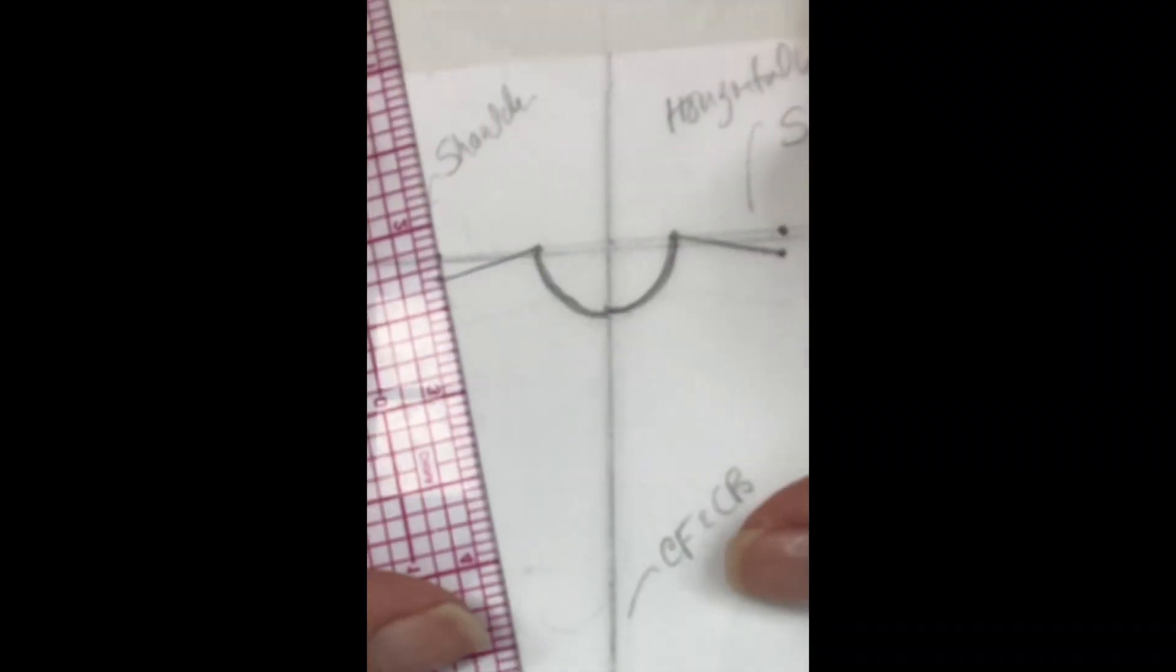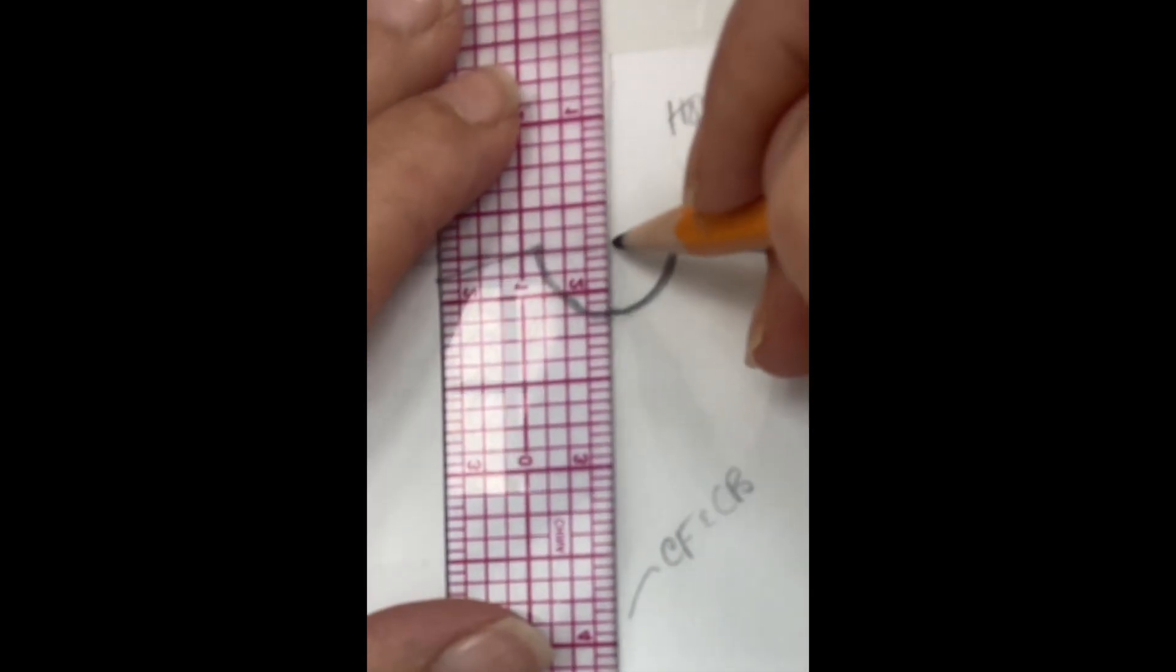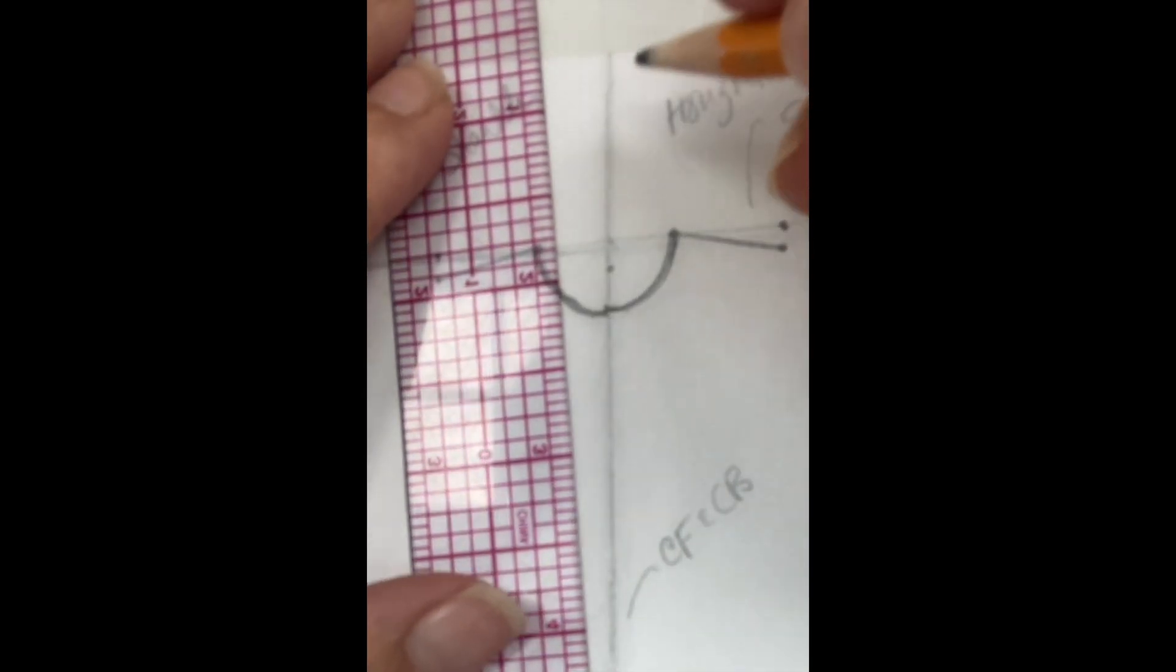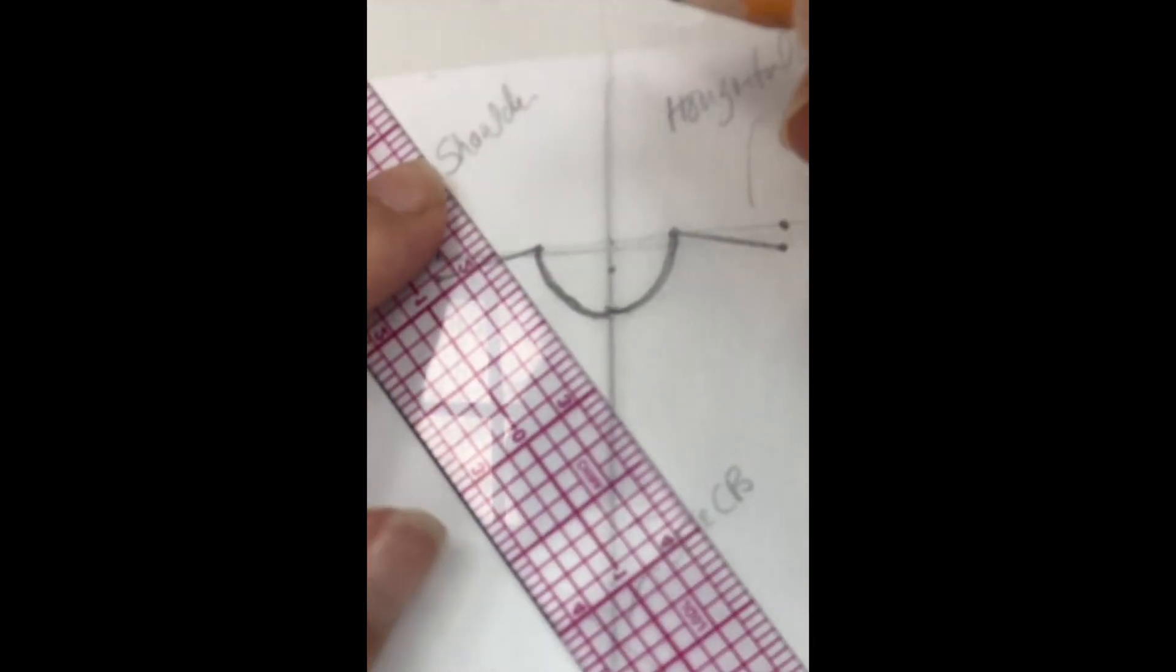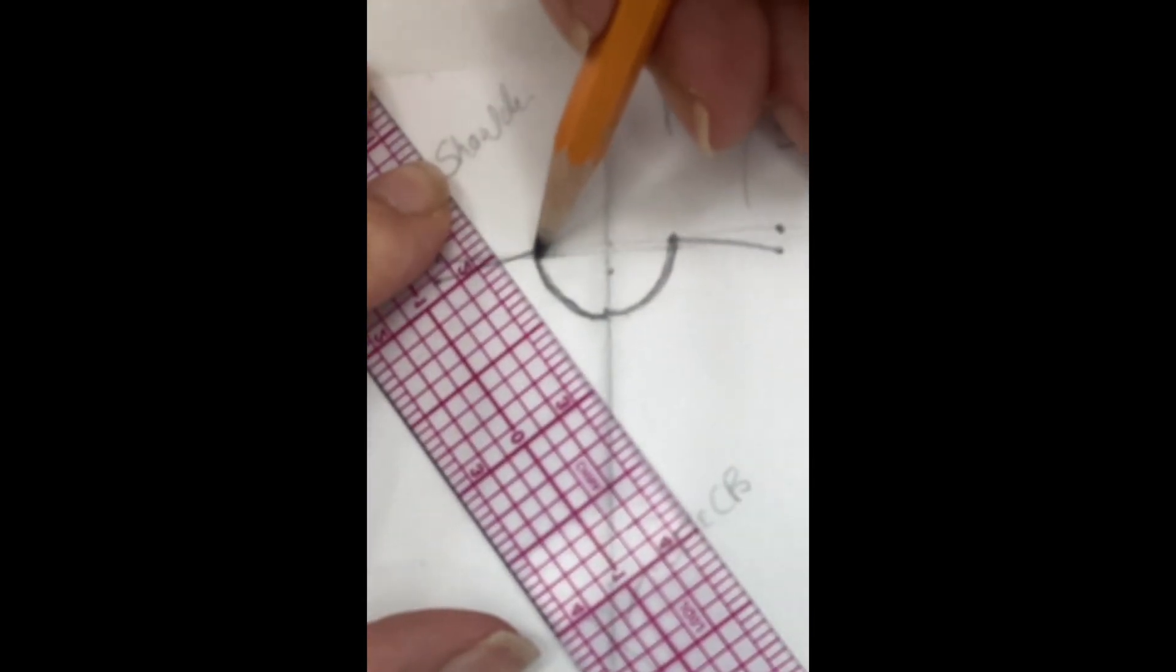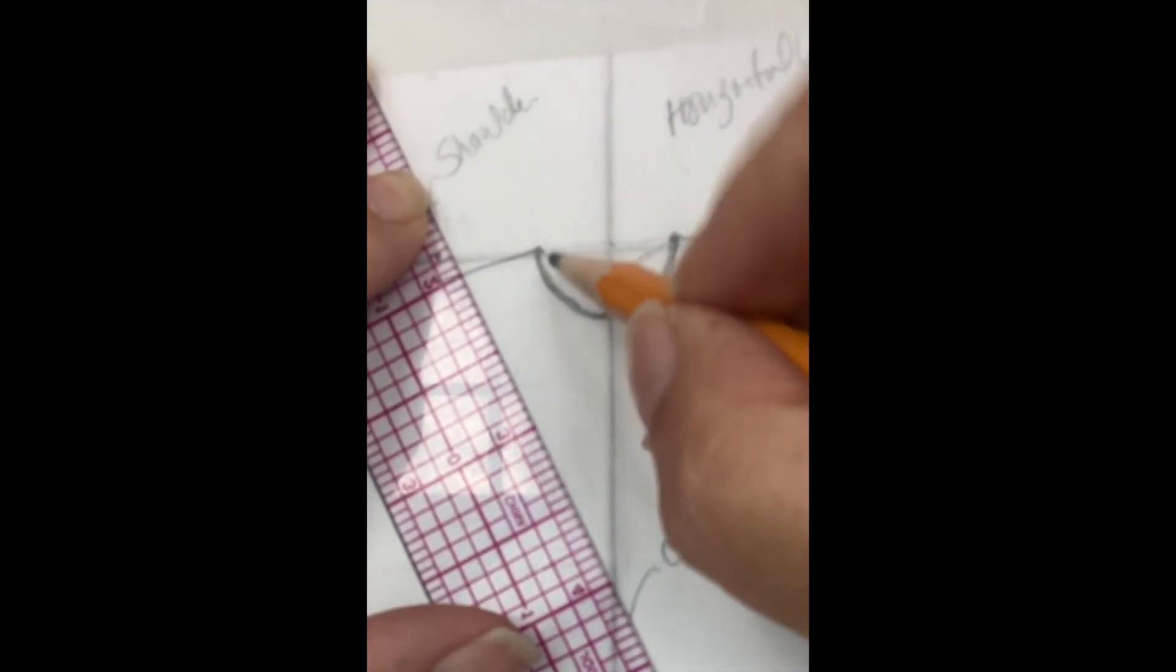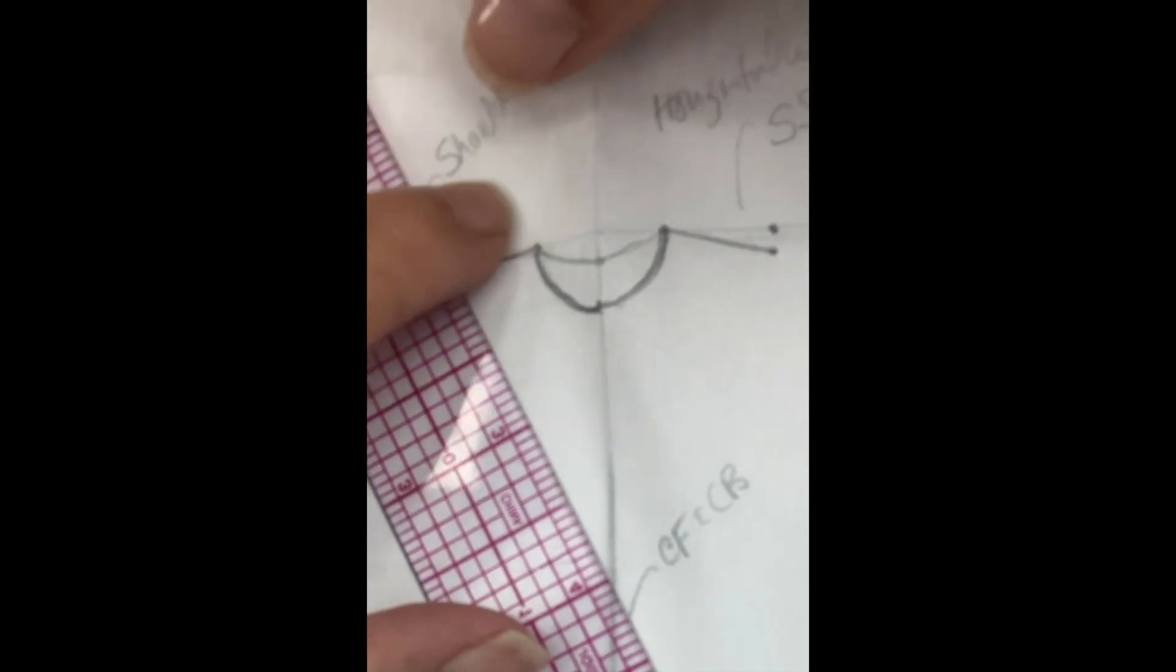Your center back, you're gonna tape it back on there. Line it up, make sure it's all lined up. I'm gonna do my center back neck drop, which is about one-eighth. Remember we talked about how the back is higher than the front. And I'm gonna do the same thing. I'm gonna draw one curve here, one curve here. And that one doesn't look good. I like that one better. I'm gonna fold it over the other side and blend it.